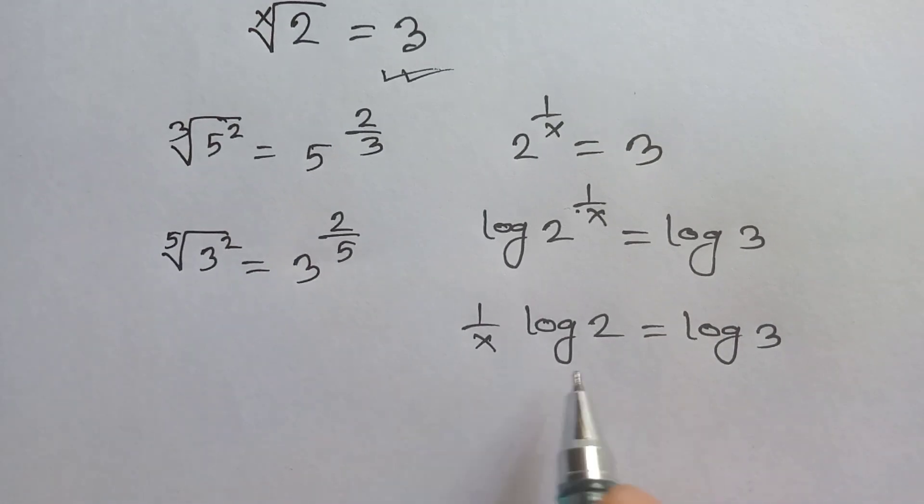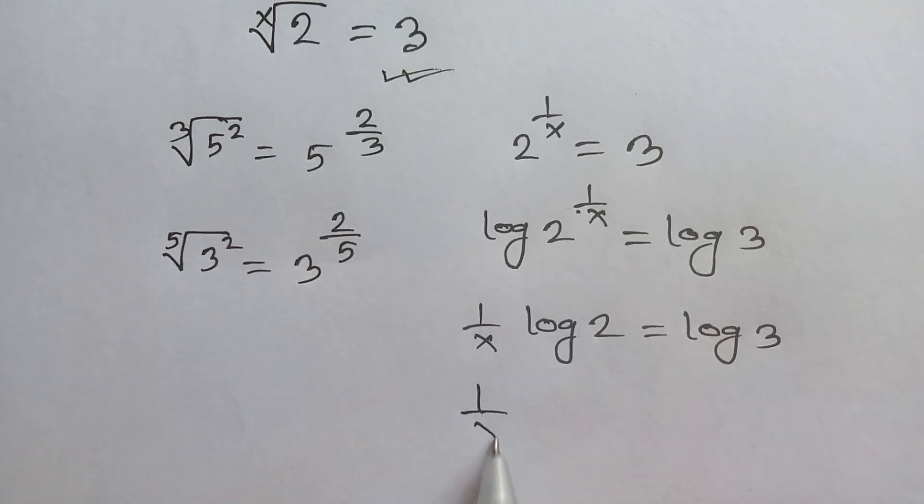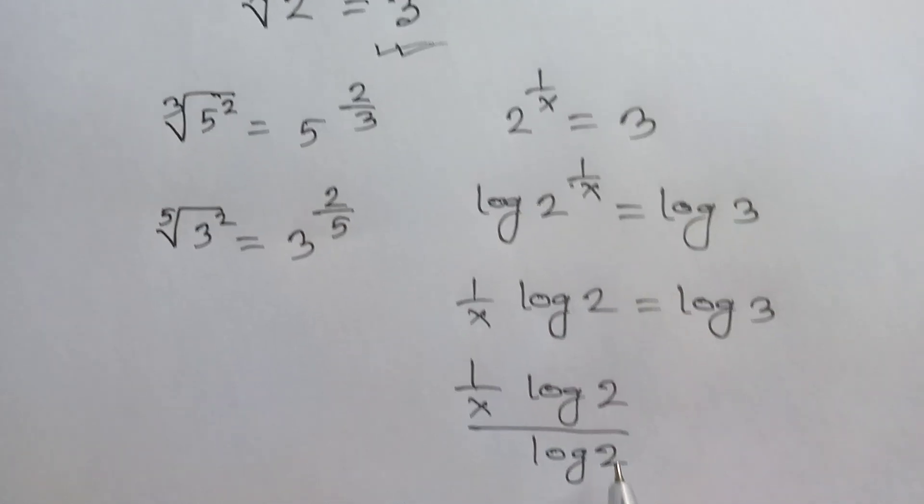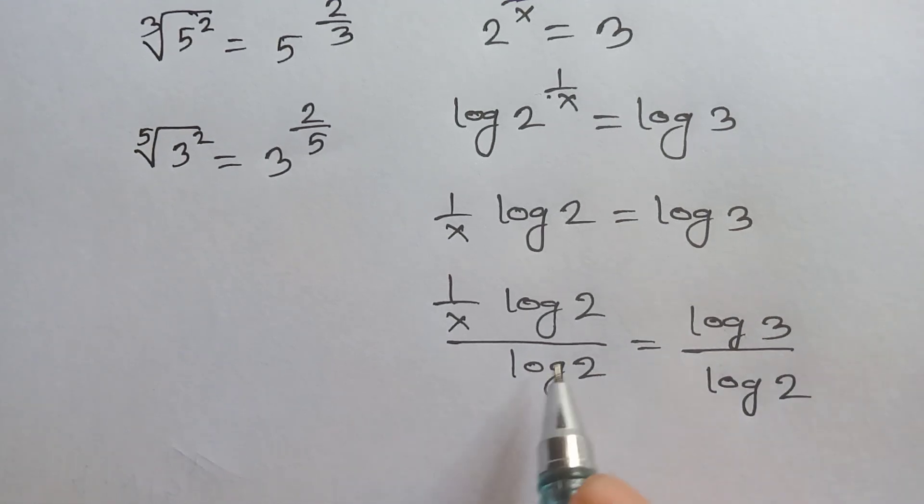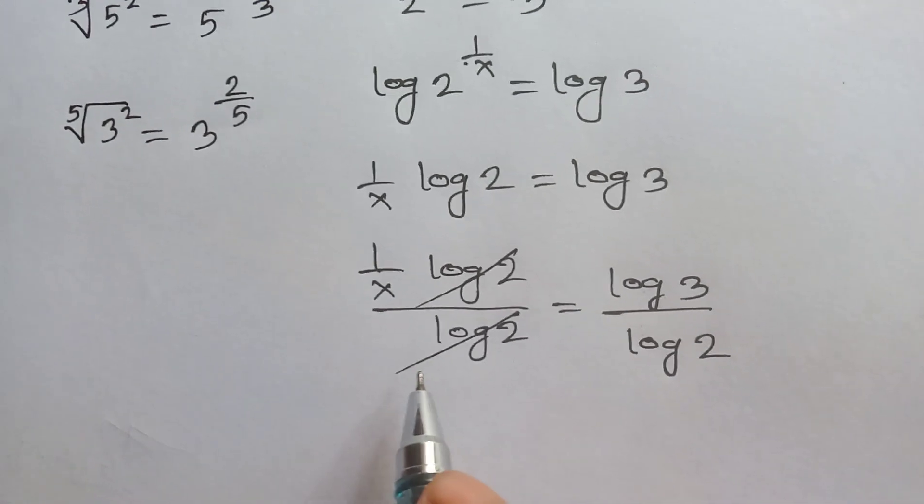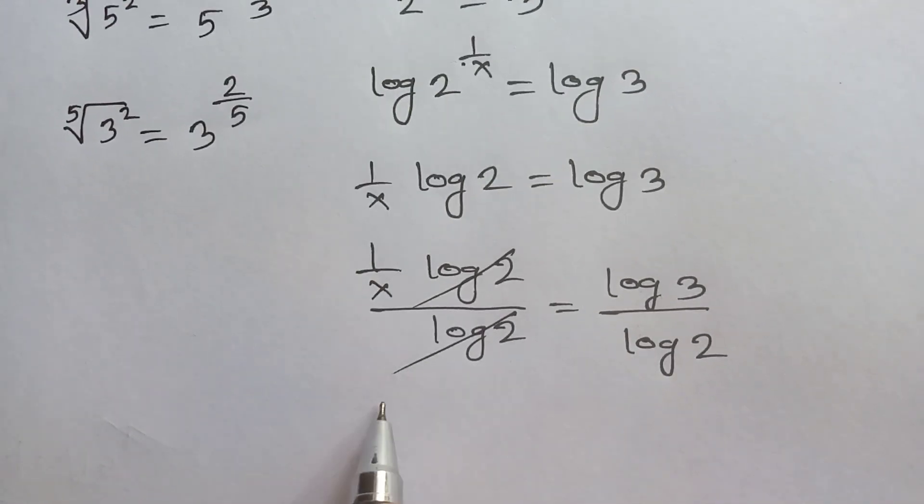Now we divide both sides by log of 2, so 1 over x log of 2 over log of 2 is equal to log of 3 over log of 2. This log of 2 and this log of 2 cancel out, so we get 1 over x is equal to log of 3 over log of 2.